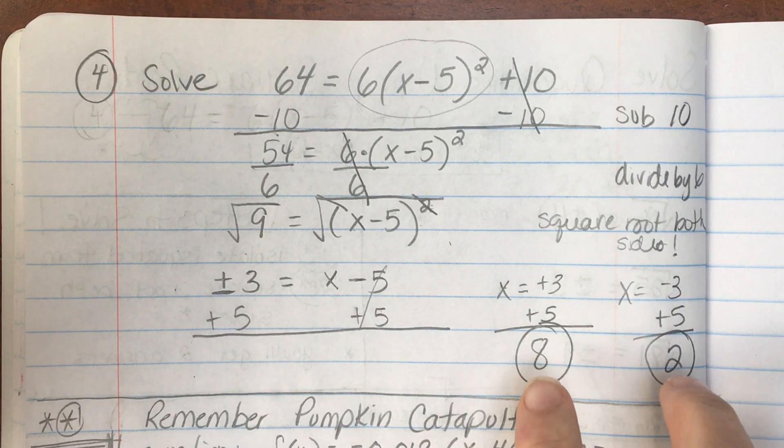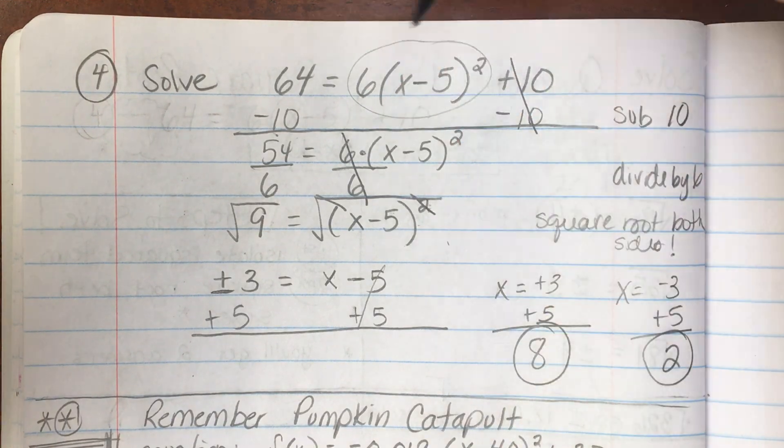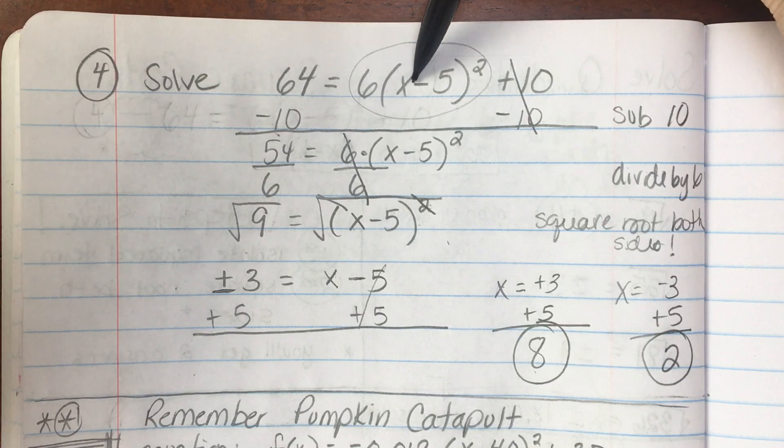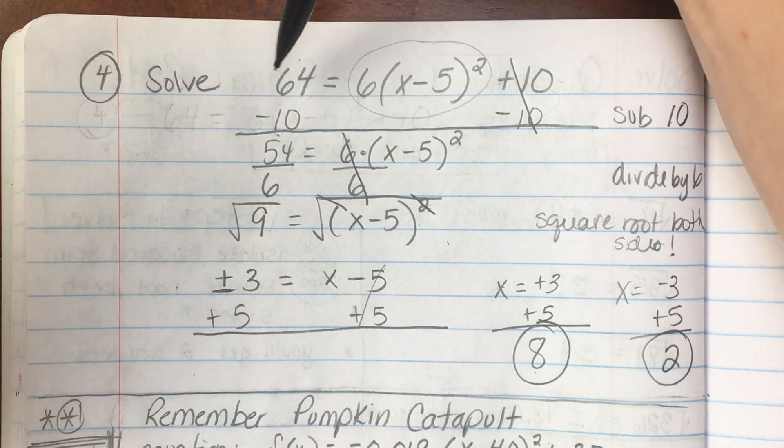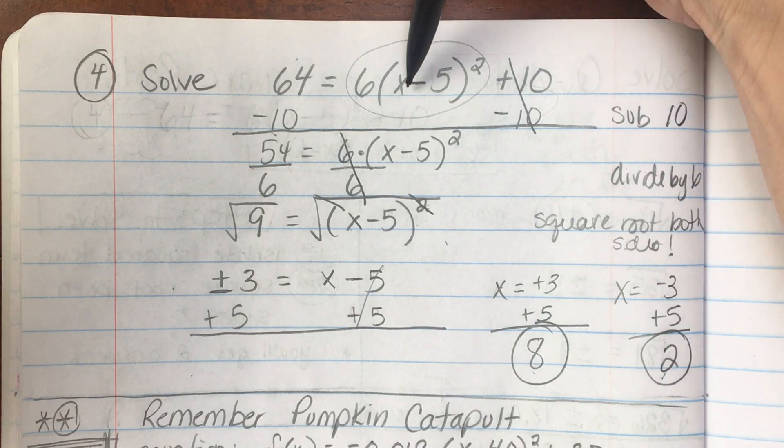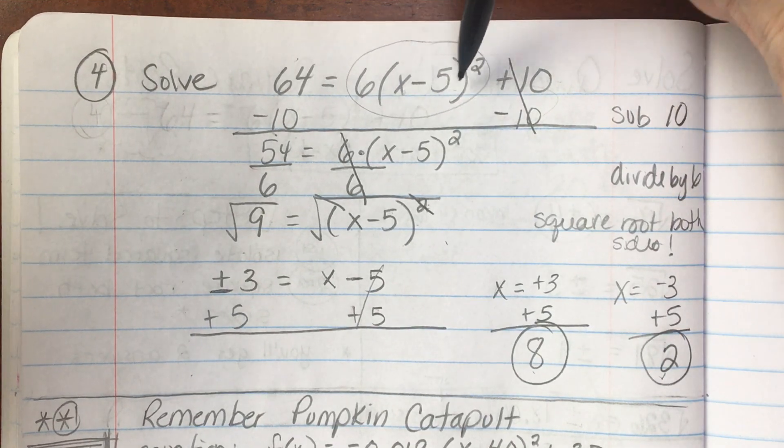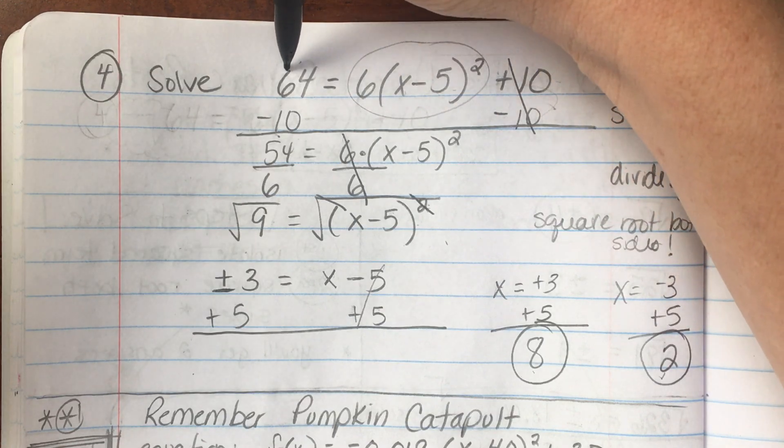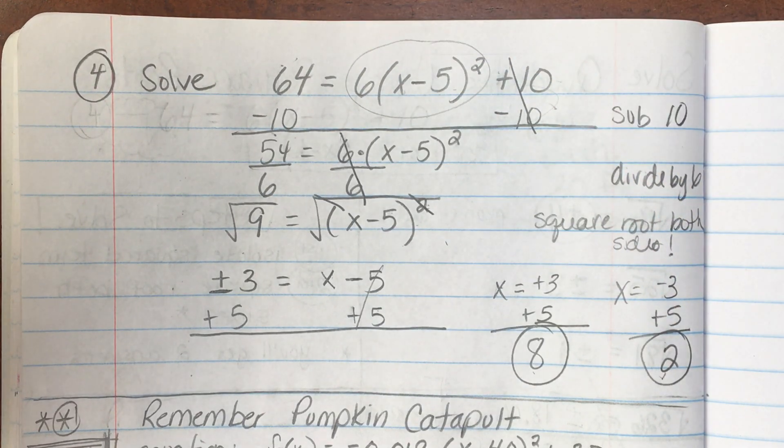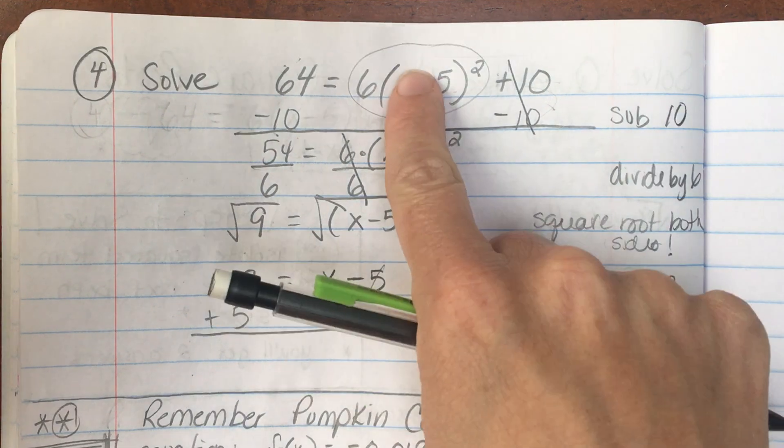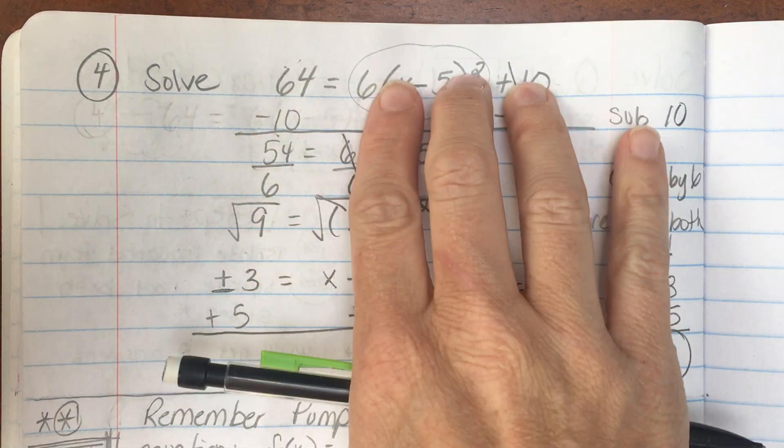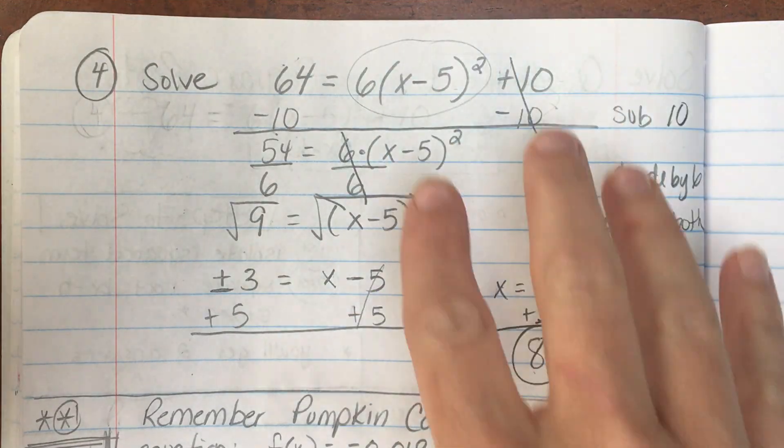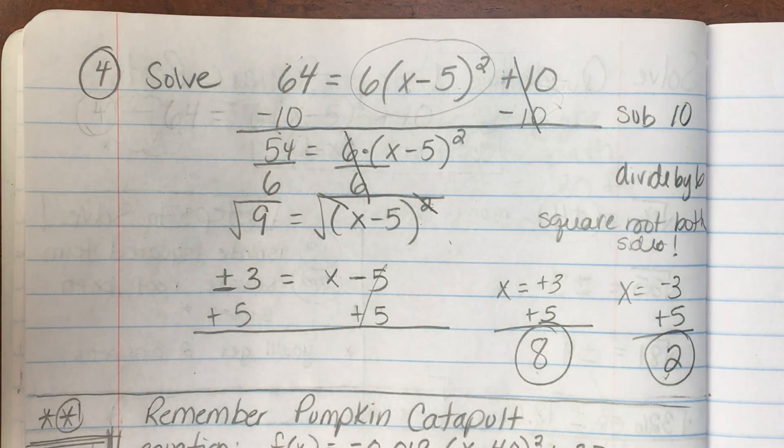That means I could put either of these numbers back into this original equation. So if I put 8 in and evaluate it out, I should get 64. If I put a 2 in for x, subtract 5, square it, multiply by 6, add 10, I should get 64. No other numbers will work for x in this equation. Just 8 would work to make the right-hand side equal 64. And just the 2 would work to make the right-hand side equal to 64.